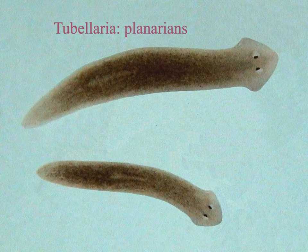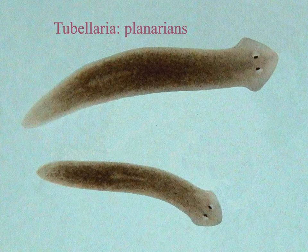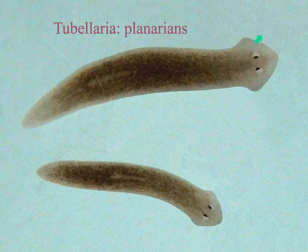Here we're looking at a planarian, class Turbellaria. We'll notice the eye spots, the arrow-shaped head, and the pharynx located right here in the center part.